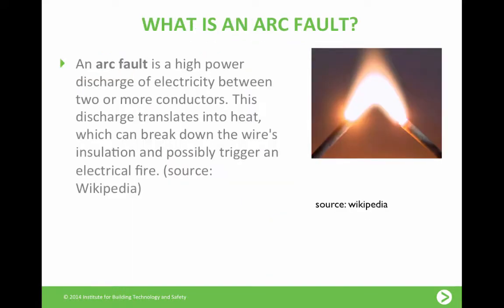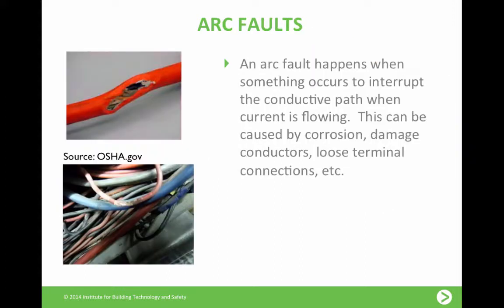So what is an arc fault? An arc fault is a high-powered discharge of electricity between two or more conductors. This discharge translates into heat which can break down the wire's insulation and possibly trigger an electrical fire. They occur when something interrupts the conductive path while current is flowing — this can be caused by corrosion, damaged conductors, loose terminal connections, and more.